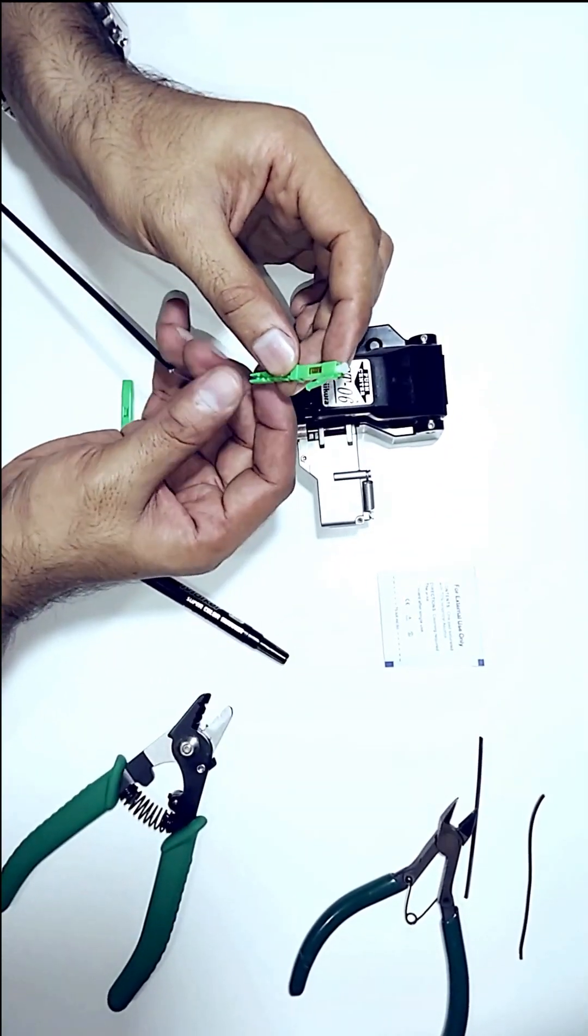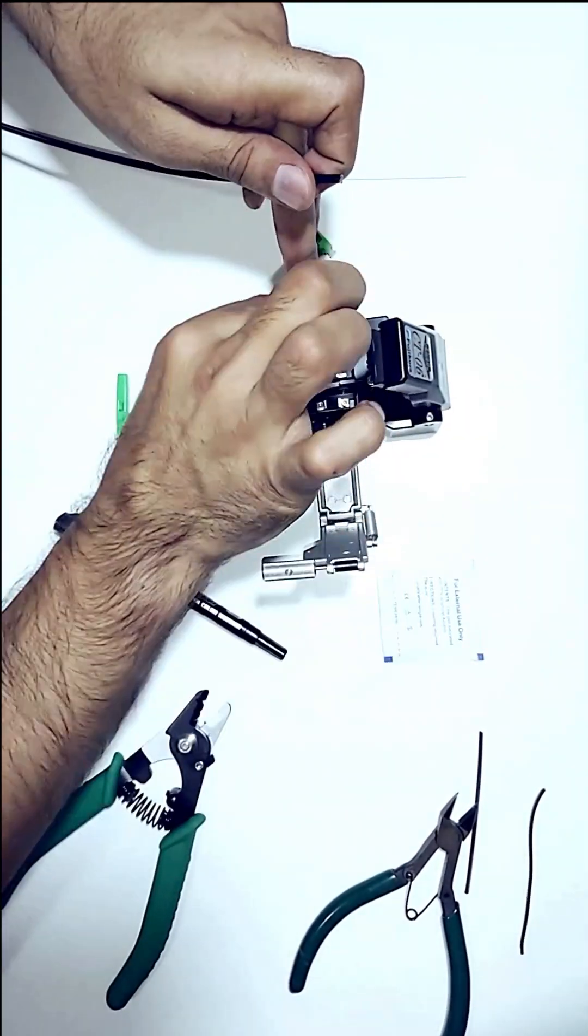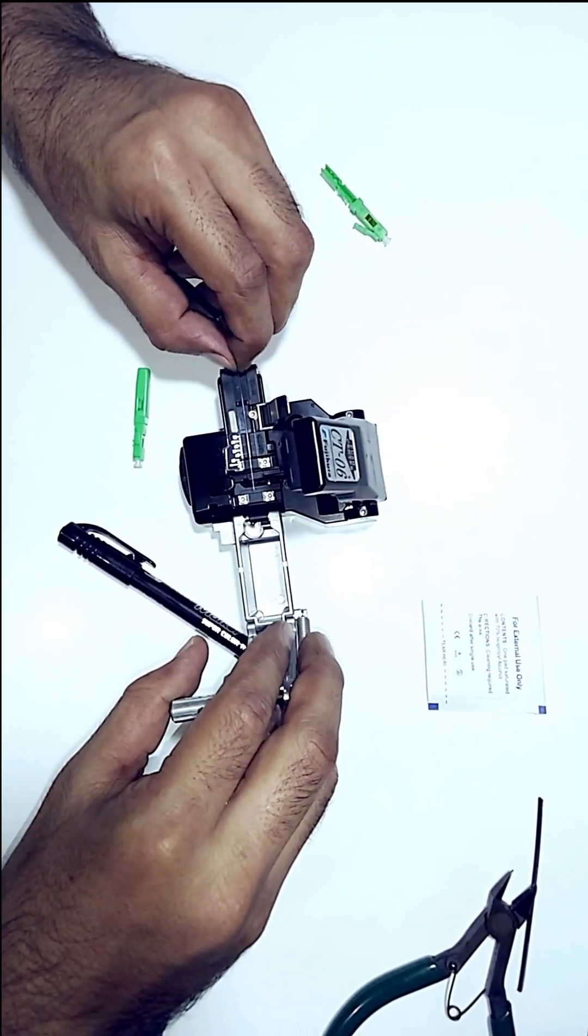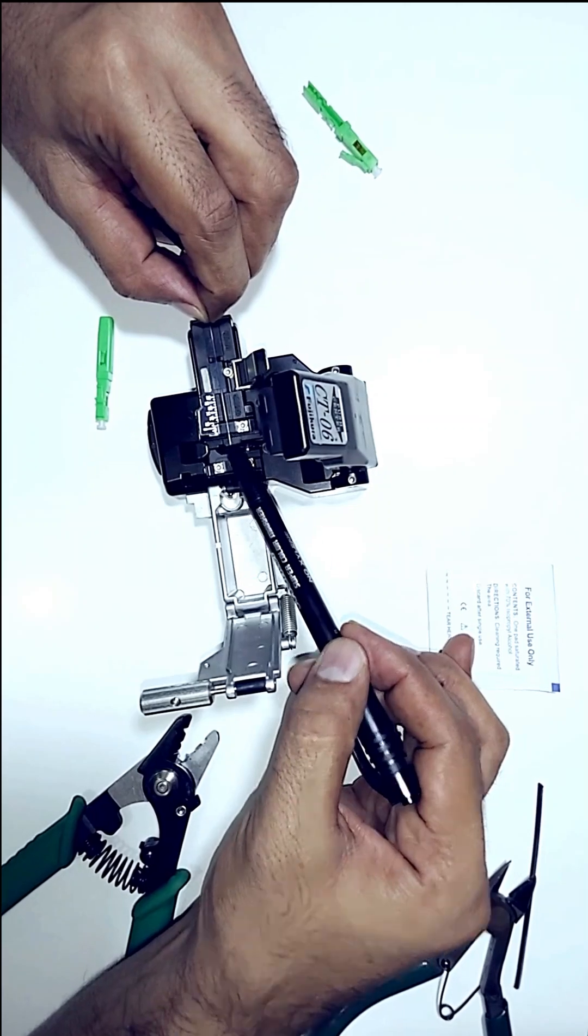First, we'll slide the back cover over the cable, and then slightly strip the fiber to insert it into the connector. Next, we'll mark the fiber at the point where the connector ends. This helps to ensure the fiber fits perfectly inside.